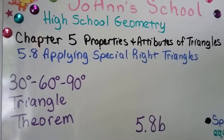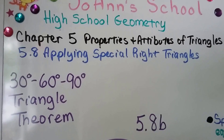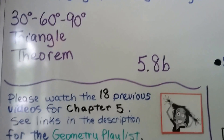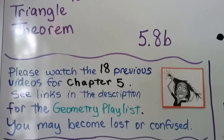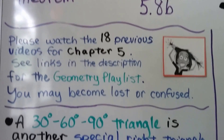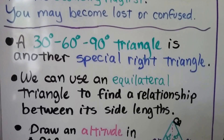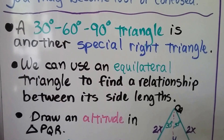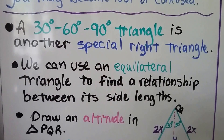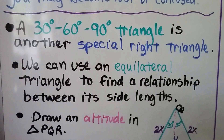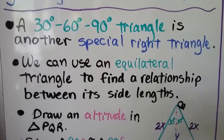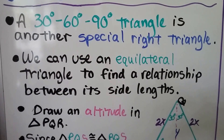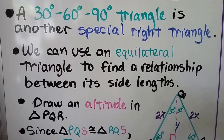We're covering the 30-60-90 degree triangle theorem at section 5.8, and there are 18 previous videos for chapter 5 in the geometry playlist. A 30-60-90 degree triangle is another special right triangle. We just learned about the 45-45-90 in the last video — that was a special right triangle, and this is another one.